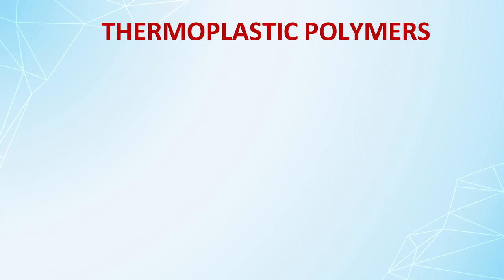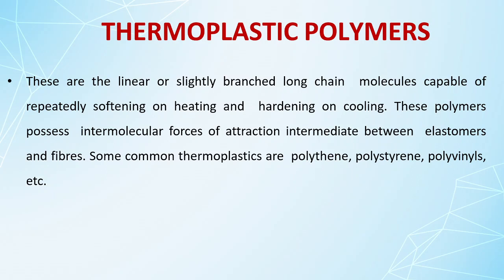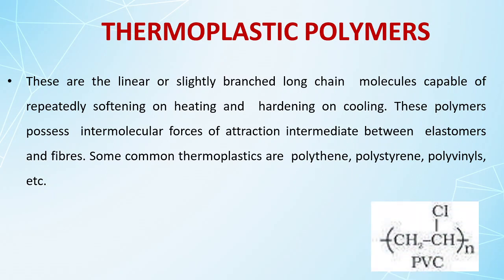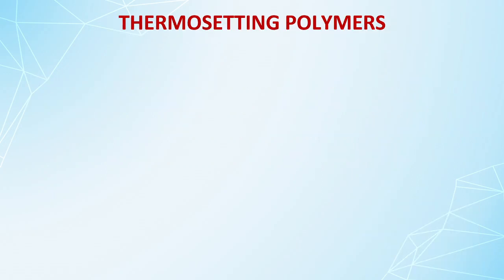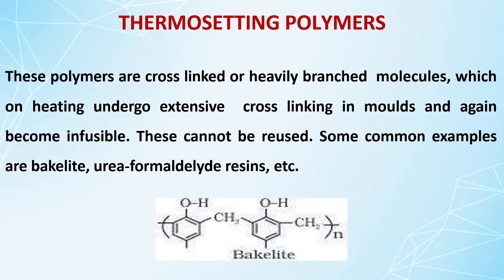Thermoplastic polymers include PVC, polythene, and polystyrene. These are linear or slightly branched long chain molecules capable of repeatedly softening on heating and hardening on cooling. Thermosetting polymers, on the other hand, are formed from heavily cross-linked branched molecules — for example, where -CH₂- groups link between heavily branched chains. Examples include Bakelite.